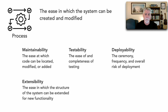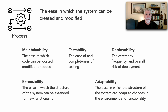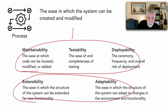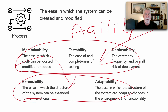Another related process characteristic is adaptability. This differs from extensibility because it's about the ease with which the structure of the system can adapt to changes in the environment and functionality, as opposed to extending it. All of these process characteristics point to a composite characteristic I've talked about in a prior video: agility — the ability to respond quickly to change, which requires all of these characteristics to change something as quickly as possible and get it to end users as fast as possible.